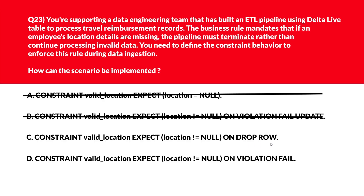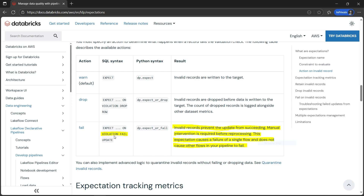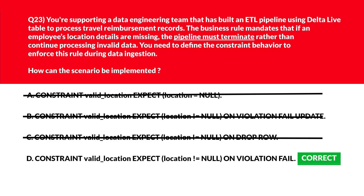We'll move to C. C is constraint valid_location expect location not equal to null on drop row. Drop row skips invalid records, which violates the termination requirement — therefore wrong choice. Option D is constraint valid_location expect location not equal to null on violation fail. Violation fail enforces pipeline termination when the constraint is breached. If you look at the official documentation, violation fail means invalid records prevent the update from succeeding and manual intervention is required before reprocessing. This causes a failure of a single flow without causing other flows in your pipeline to fail — that's what is required. Let's lock option D as the right choice.